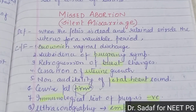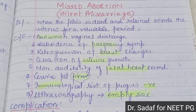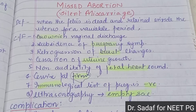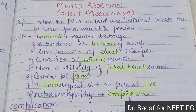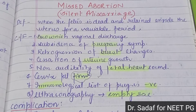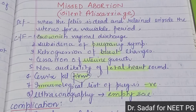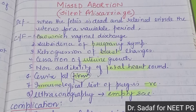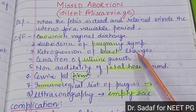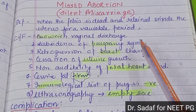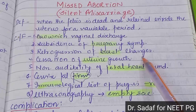Next, we will discuss missed abortion. Missed abortion is when the fetus is dead and retained inside the uterus for a viable period. When the fetus is dead and remains in the uterus for such a period, we call it missed abortion. What are its clinical features? The vaginal discharge will be brownish in color. The pregnancy symptoms will subside, including nausea, vomiting, and breast changes.